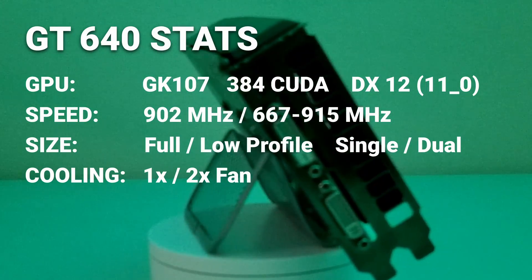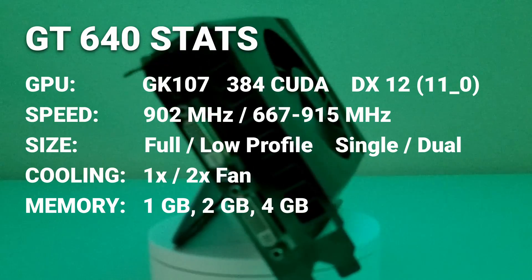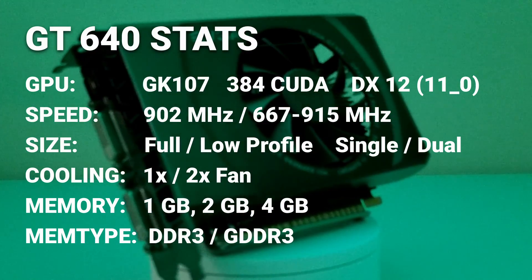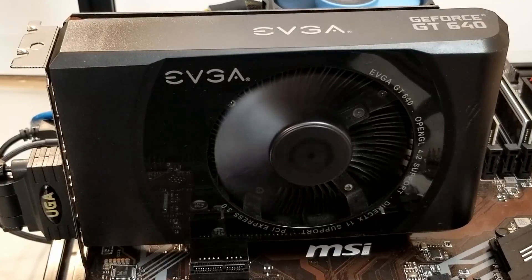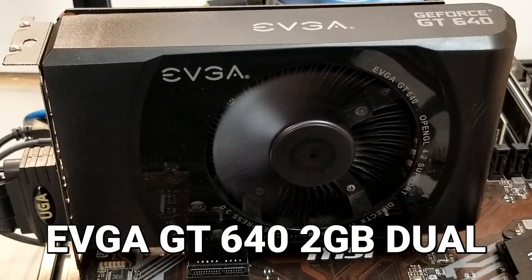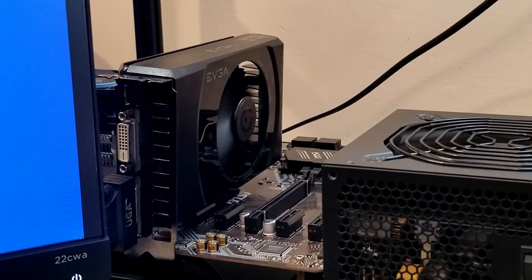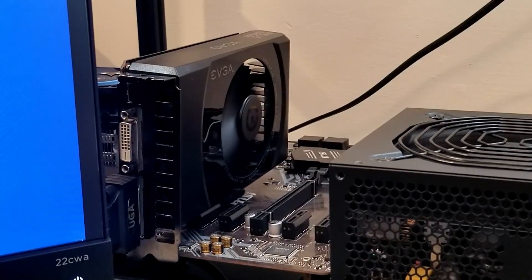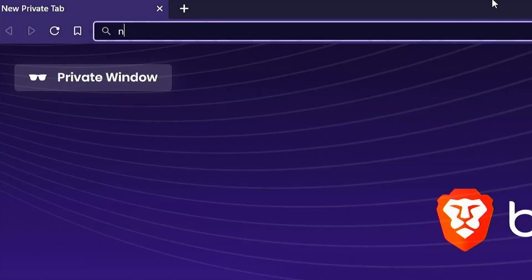The GT 640 comes with one, two, or four gigabytes of DDR3 or GDDR3 memory. The example card we have here is the EVGA GT 640 2GB dual slot. So let's get ready to overclock and benchmark this little card and see what kind of performance we can push out of it.